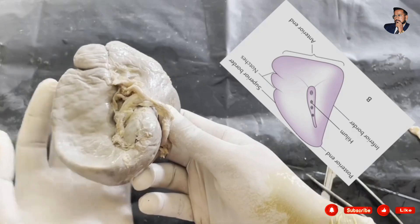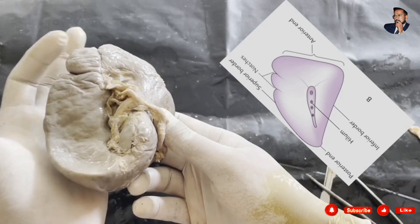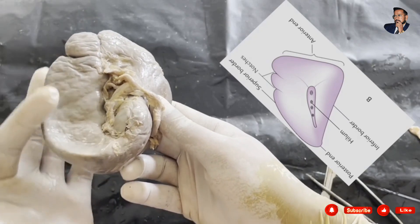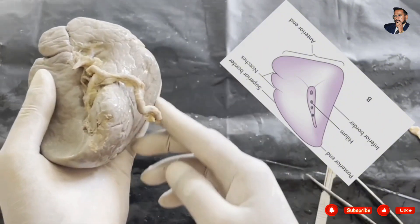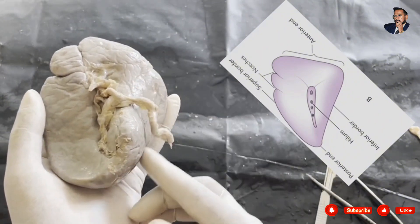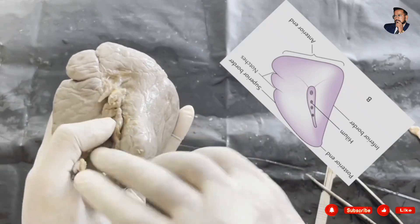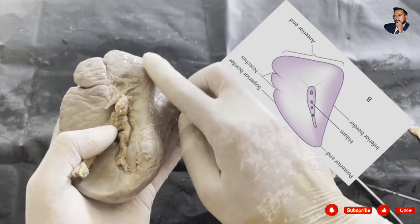It consists of three borders. This is the superior border which has the splenic notch. This is the inferior border, and this is the intermediate border.